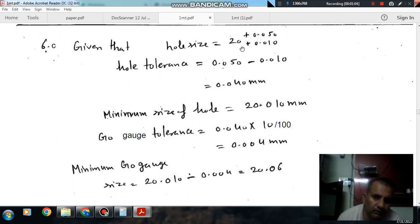So here the hole size is 20 plus 0.050 and 20 plus 0.010. And hole tolerance is given as upper limit minus lower limit, so that will be 0.040mm.